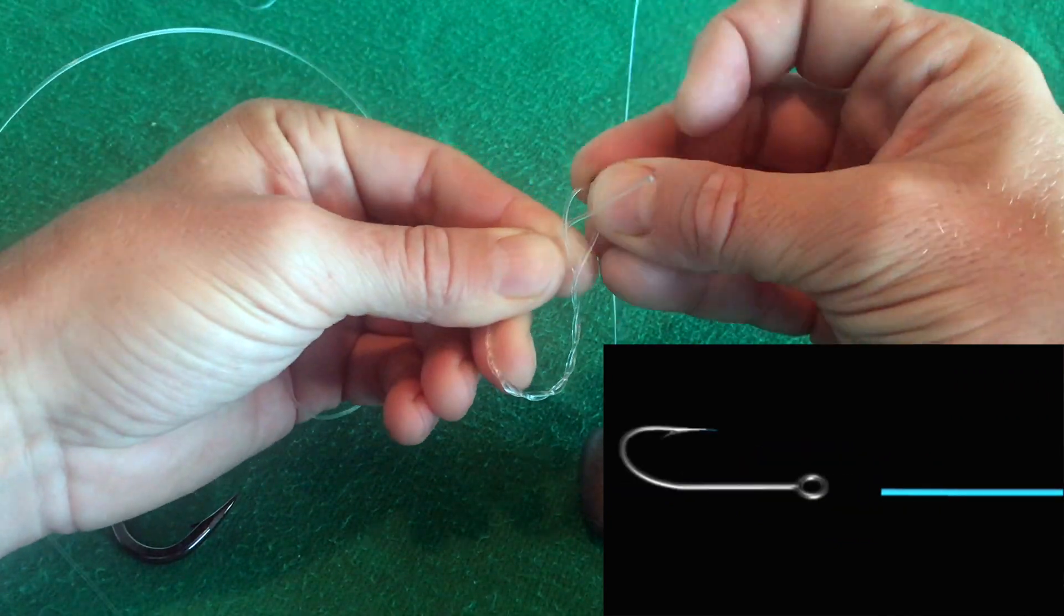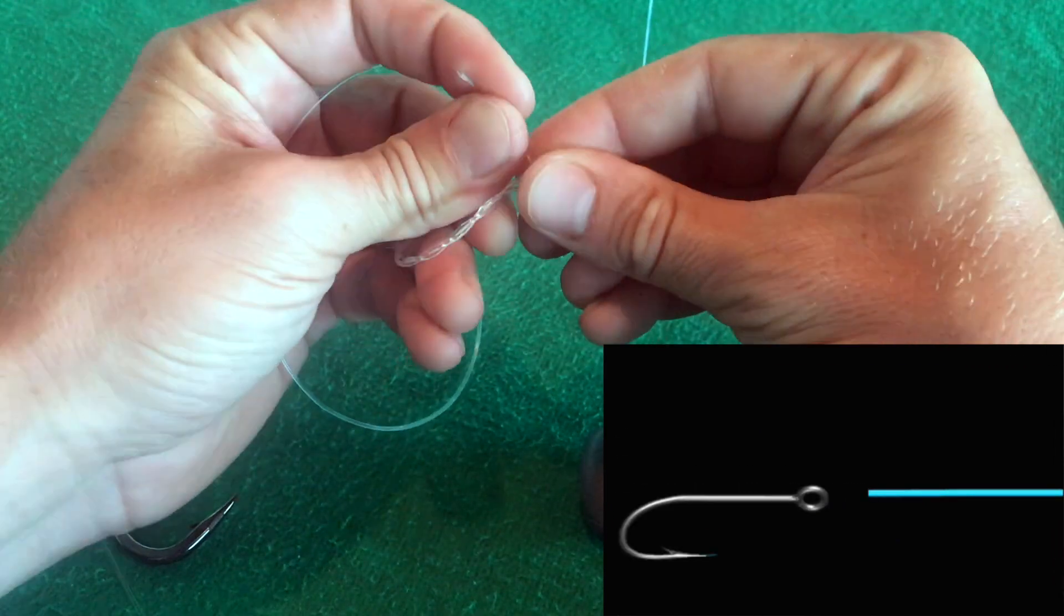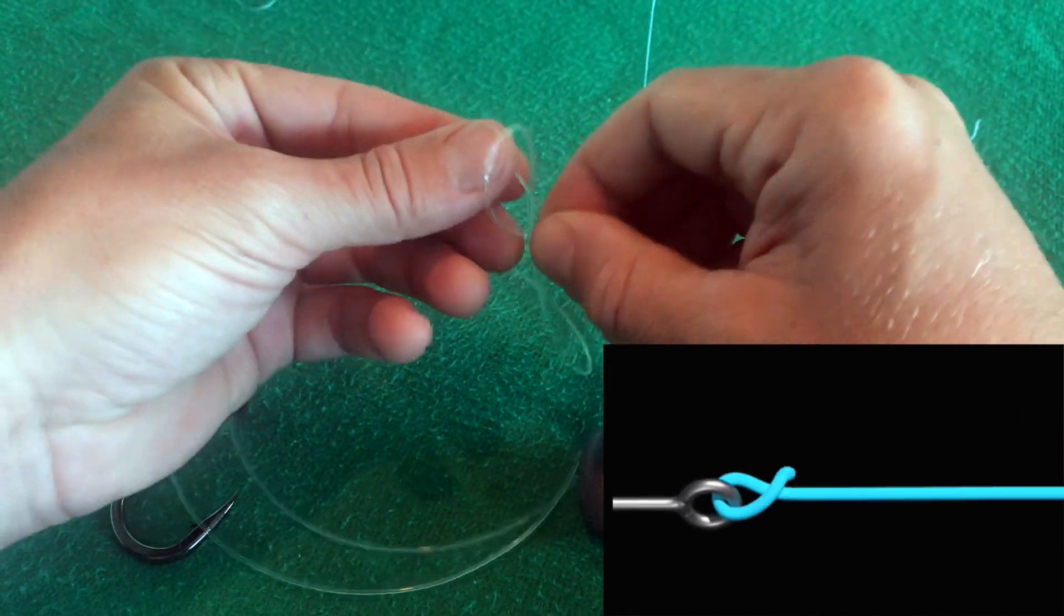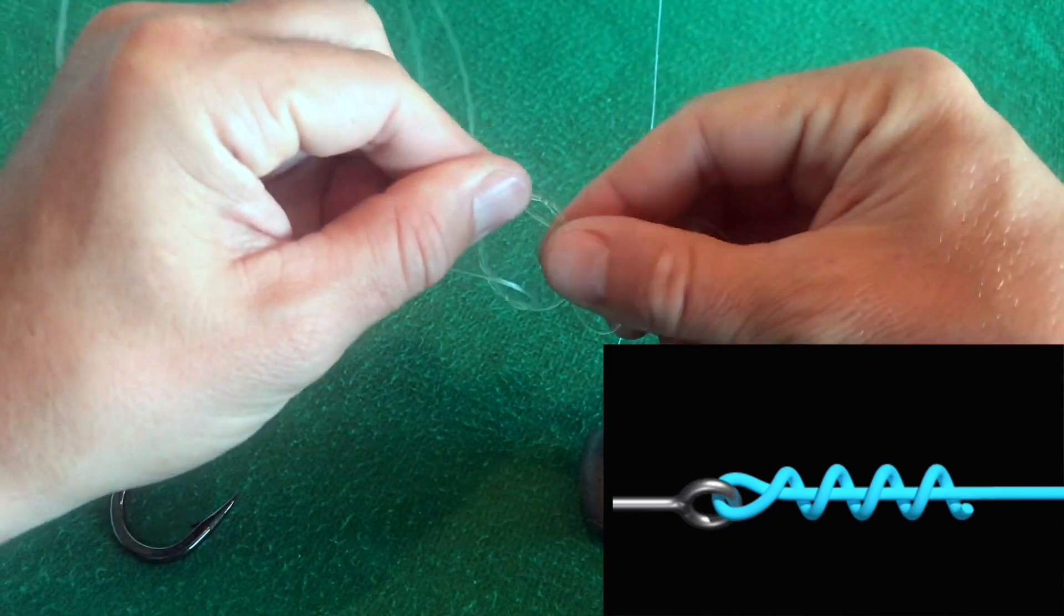And then I'm going to stick that line through that hoop, through that loop that we've created. And then I'm going to take this line back through this big hoop, this big loop. And it will look something like this before it cinches up.